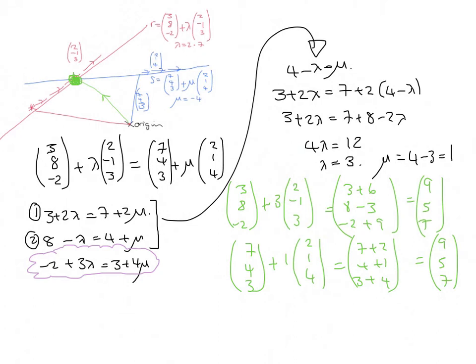So, let's see what happens if we take our λ is 3, -2 + 3 lots of 3. And that gives us -2 + 9, which is 7. Does that work for the other side of the equation? μ, I know I need to be 1. 3 + 4 lots of 1, is 3 + 4. Yay, 7. So, they do intersect. They intersect because all three equations are the same when λ is 3 and μ is minus 1. And they intersect at the coordinate (9, 5, 7).